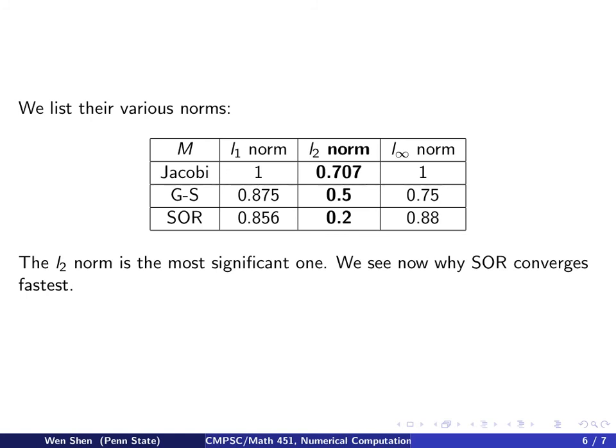If you look at that norm, you see that Jacobi iteration gives you about 0.7, Gauss-Seidel gives you 0.5, and SOR gives you 0.2. So we see that's much better, the SOR. Each iteration will reduce your error by a factor of 0.2. Now we understand better why the SOR method performs better, because now we have theoretical background to back up.